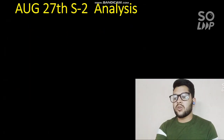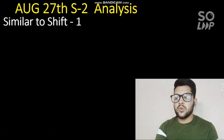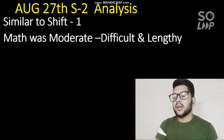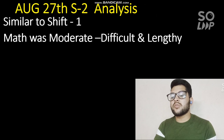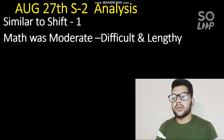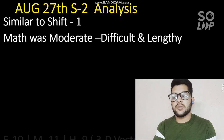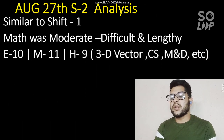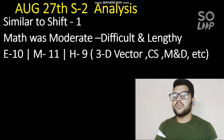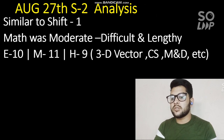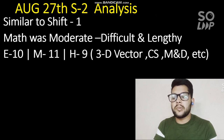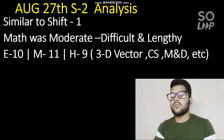For 27th August Shift 2 analysis, it was similar to Shift 1. Math was moderate to difficult - not highly difficult, but moderate to difficult and lengthy with time-consuming questions. Easy questions were 10, moderate 11, hard 9. More questions were asked from 3D vectors, conic sections, matrices, determinants, probability, and permutation-combination - similar topics to Shift 1.